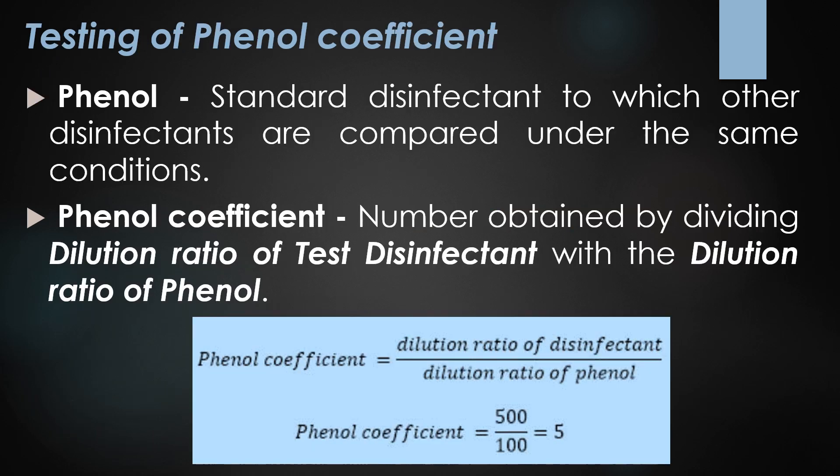Since Joseph Lister introduced phenol as the first disinfectant, it has become the standard disinfectant to which others are compared. The phenol coefficient is a number obtained by dividing the dilution ratio of the test disinfectant by the dilution ratio of phenol. For example, if the dilution rate of the test disinfectant is 500 and phenol is 100, the phenol coefficient is 5.